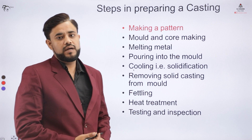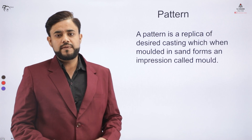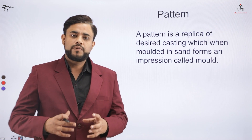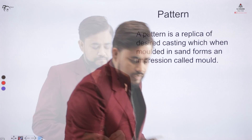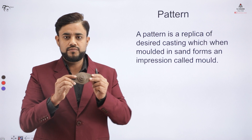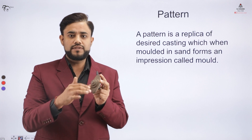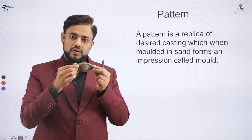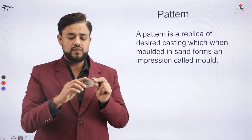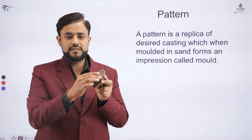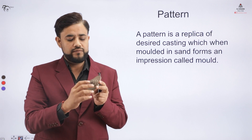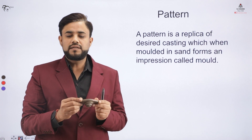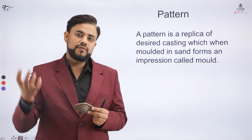Let us understand what a pattern is and how we prepare it. A pattern is basically a replica of the final item that you want to produce. Say you want to produce a particular item — an exact replica of that item is created and that replica is called a pattern. The pattern creates an impression on the sand, forming a cavity of similar shape. To get that cavity, we produce the exact replica of the item, imprint it on the sand to create a cavity, and then pour the metal into that cavity.